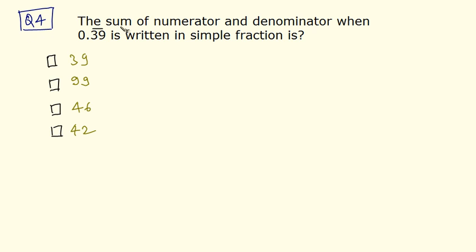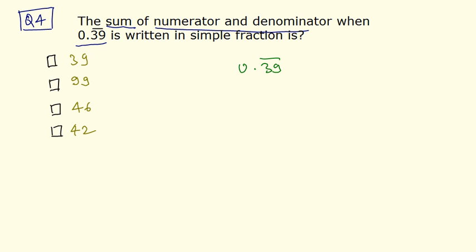Moving on to the final question. You have to find out the sum of the numerator and denominator. You have been given the recurring decimal number, so let's first convert it to a simple fraction. We have 0.39 where 39 is recurring. Count the recurring and non-recurring digits — there are no non-recurring digits, only recurring digits, and the count is 2. So in the denominator you have 2 nines, which is 99. And in the numerator you write the number as it is: 39.